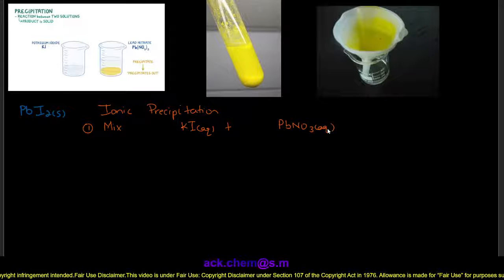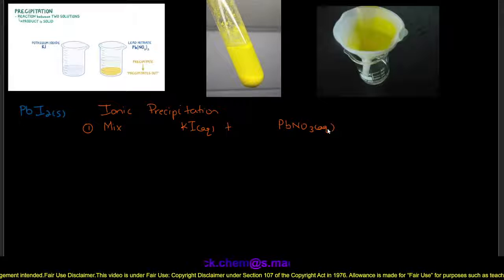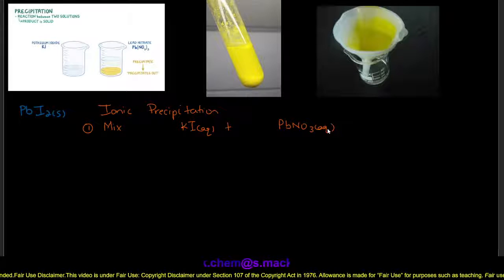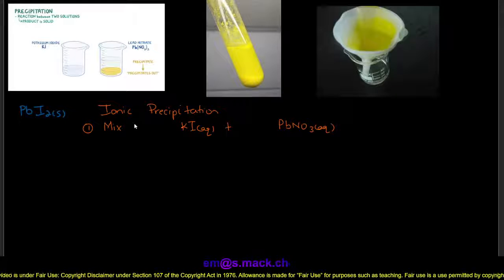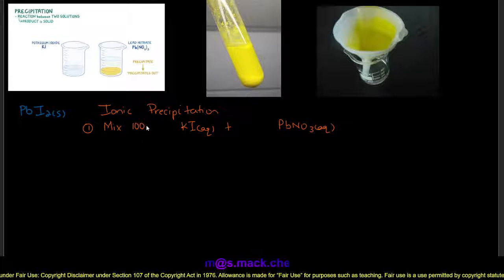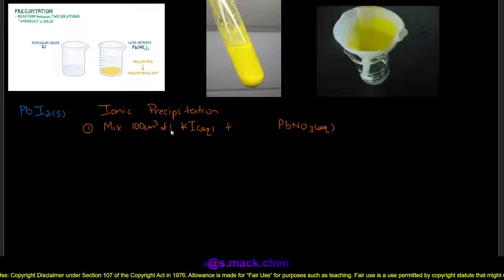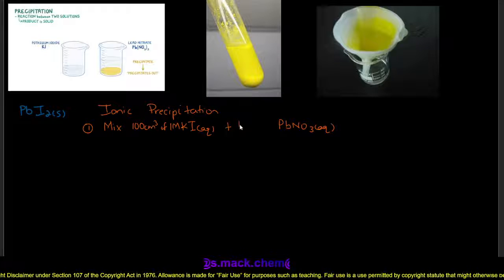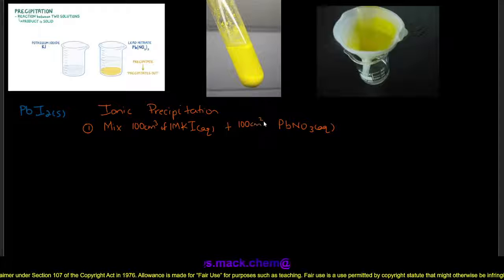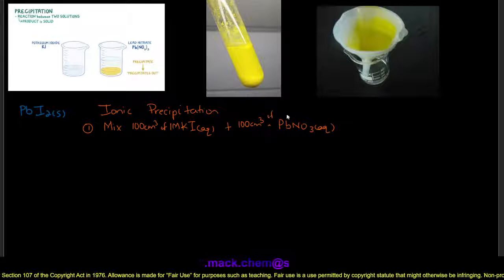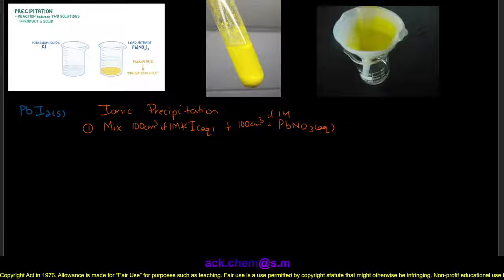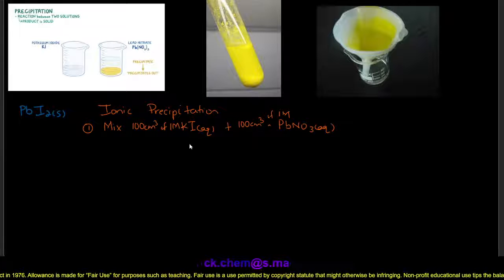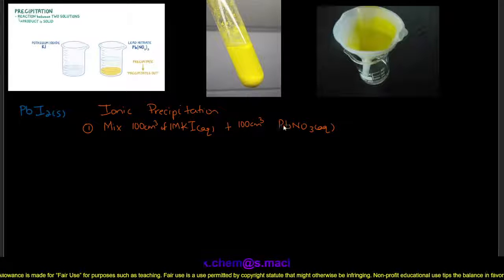These are our two solutions to be mixed together. And in the method, we must mention the volumes and concentrations of the solutions to be used. Now, you can go ahead and use a standard volume of 100 cm³ of 1 molar potassium iodide and even the same amount of lead nitrate. So we're keeping it standard in terms of the amounts and concentrations of the solutions that we will mix.